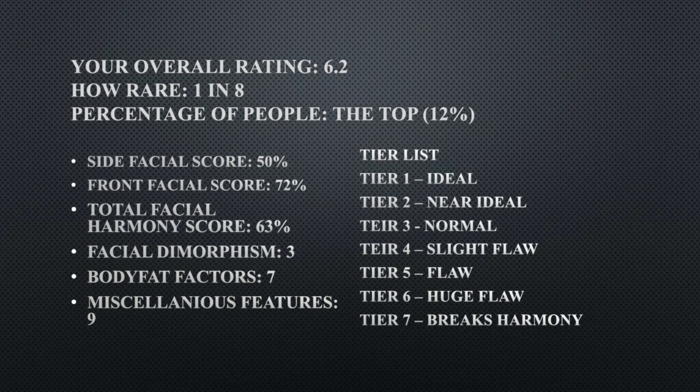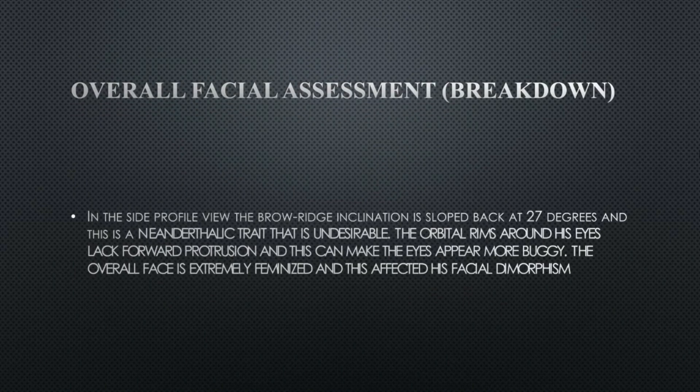His side facial score is at 50 percent, his front facial score is 72 percent, his total facial harmony is 63 percent, his facial dimorphism is a 3, his body fat factor is a 7, and his miscellaneous features is a 9. The tier list goes: tier 1 ideal, tier 2 near ideal, tier 3 normal, tier 4 slight flaw, tier 5 flaws, tier 6 huge flaw, tier 7 breaks harmony.